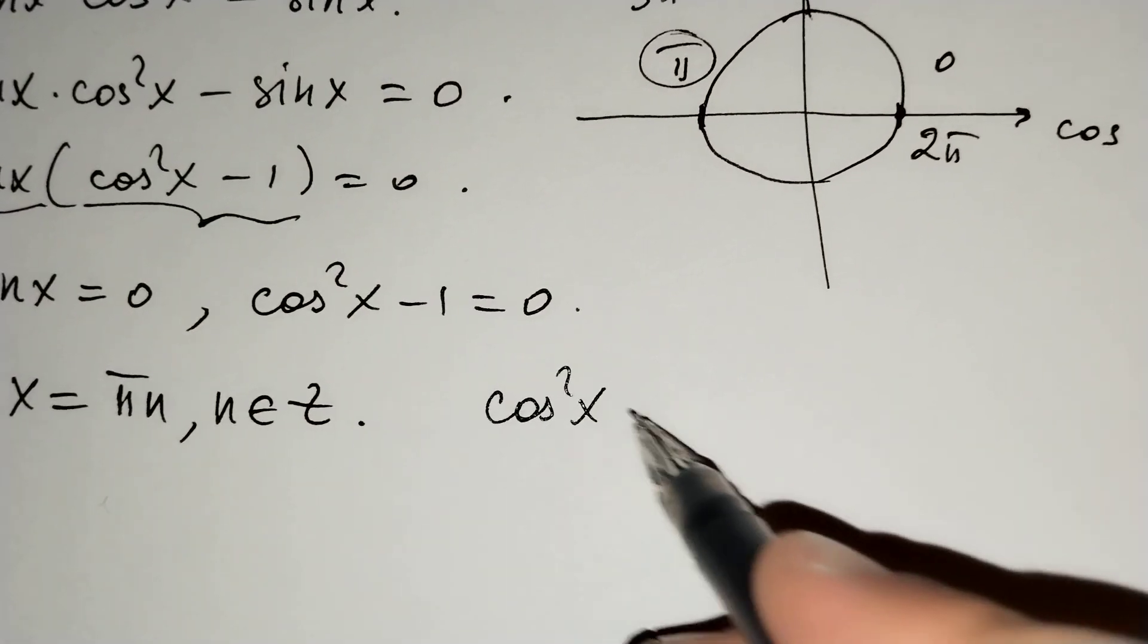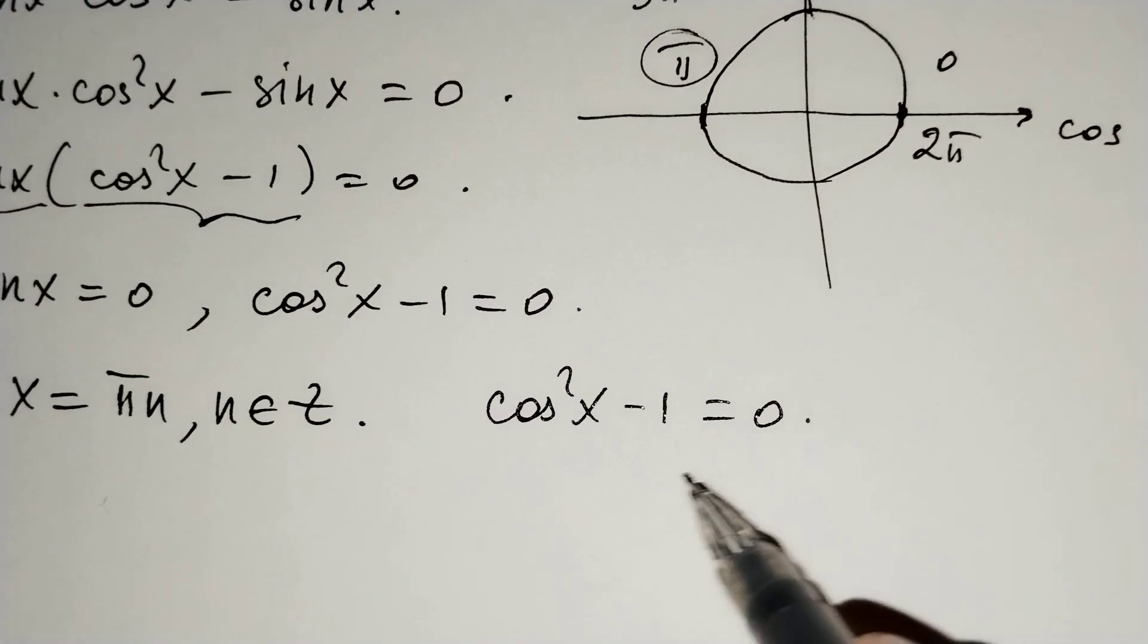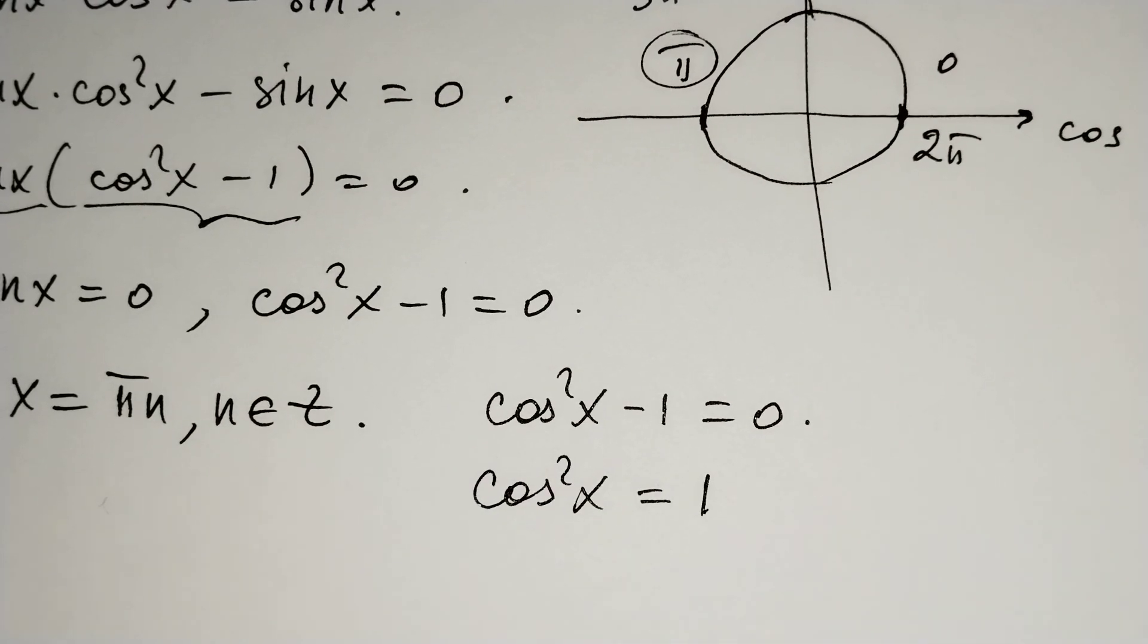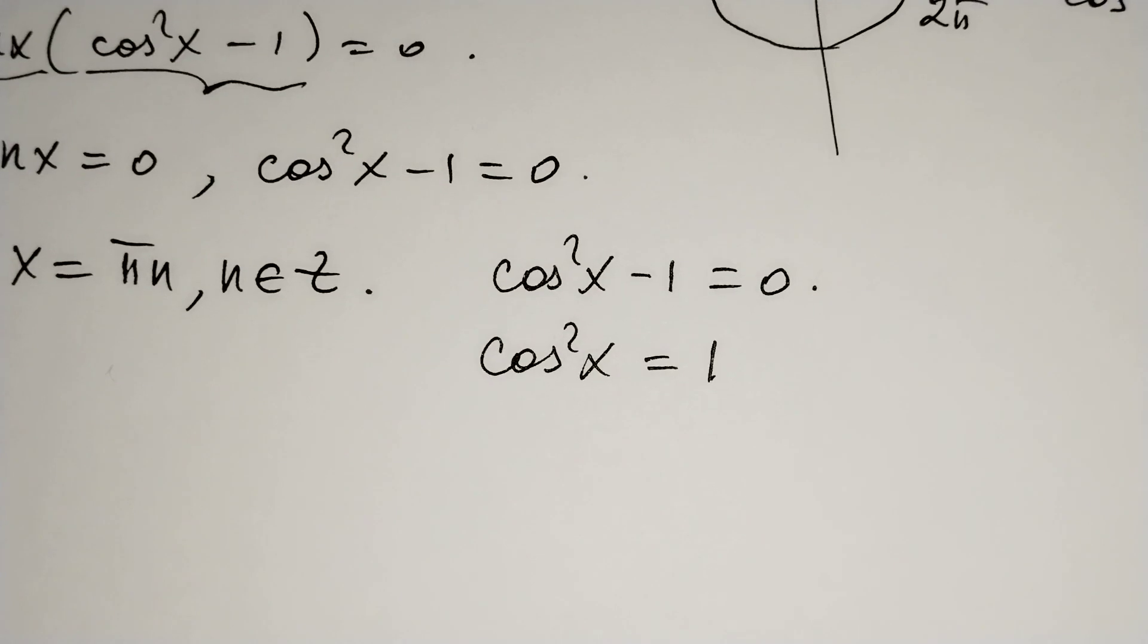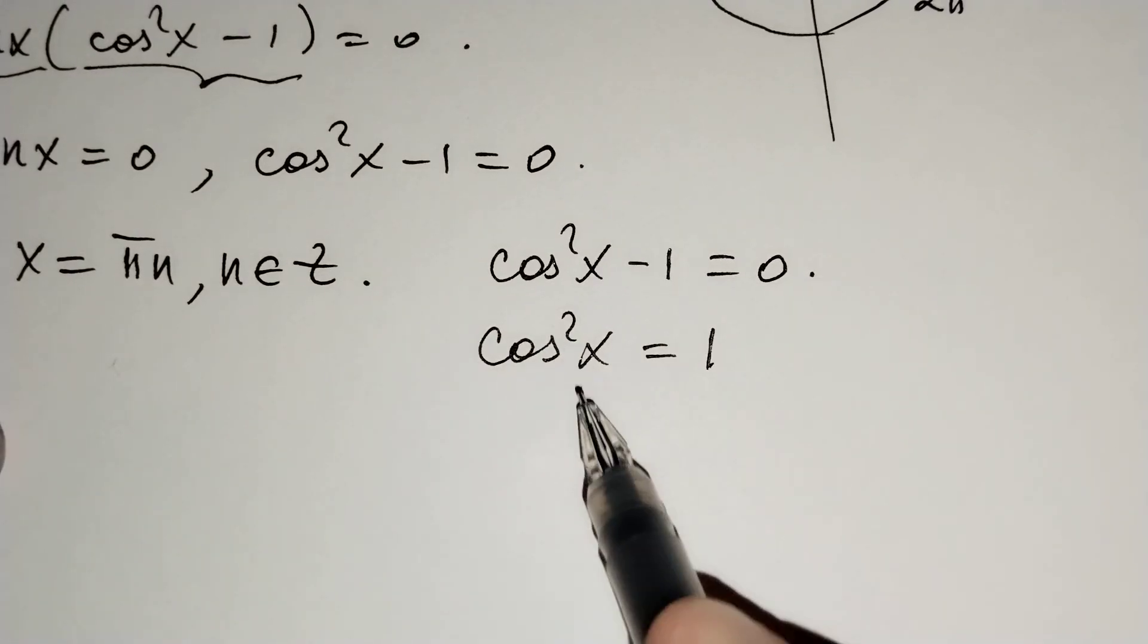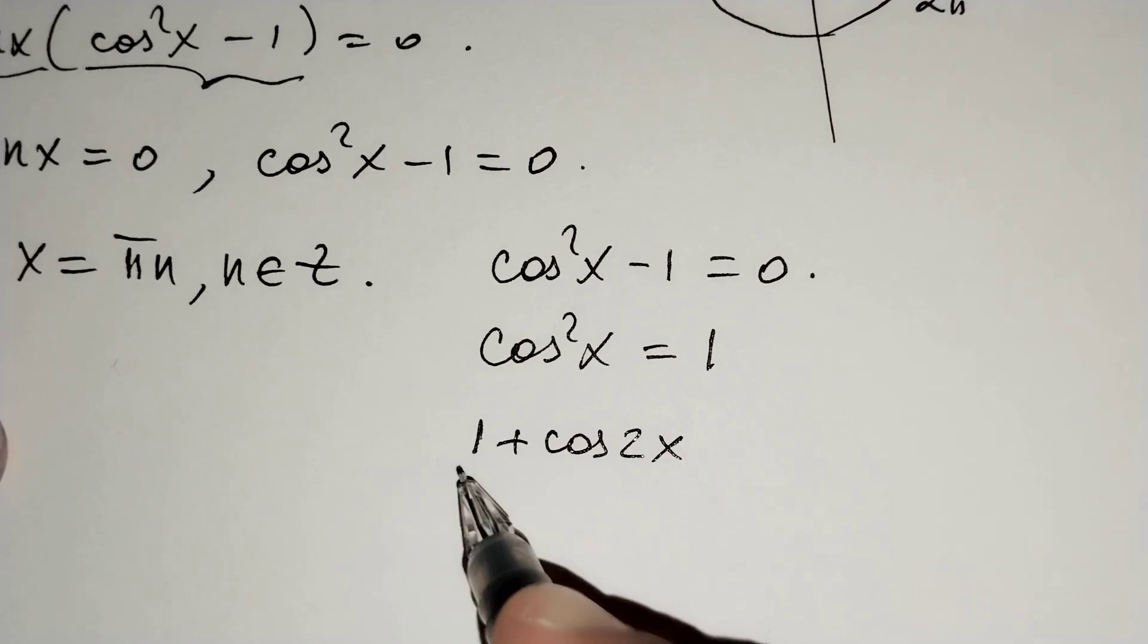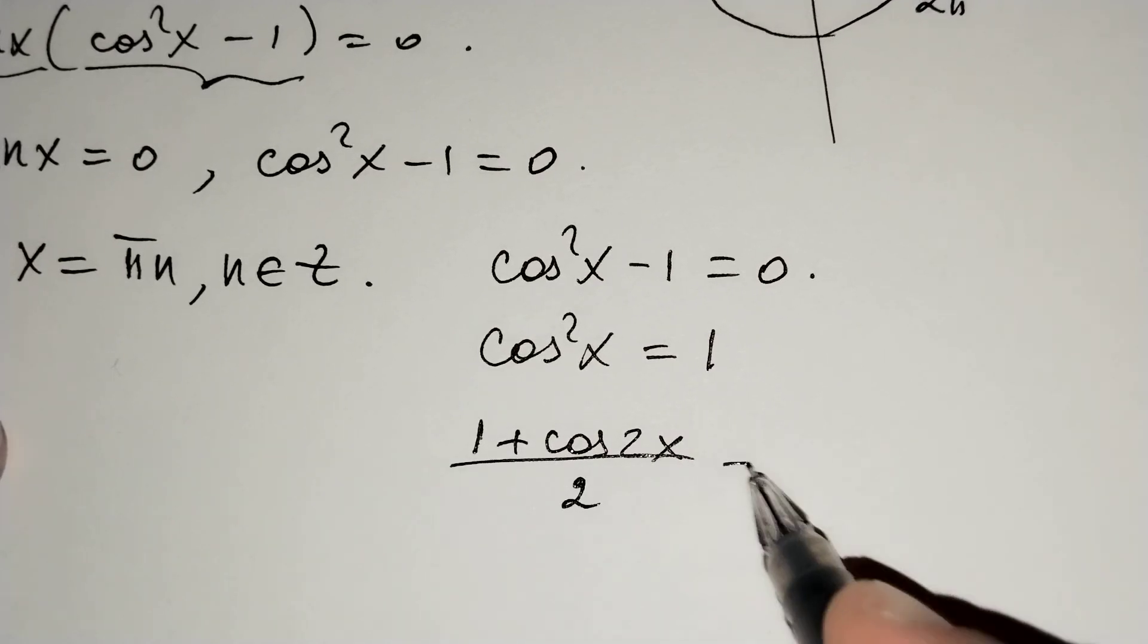Cosine squared x minus 1 equals 0, so cosine squared x equals 1. We know that cosine squared x equals (1 plus cosine 2x) over 2, so this equals 1.